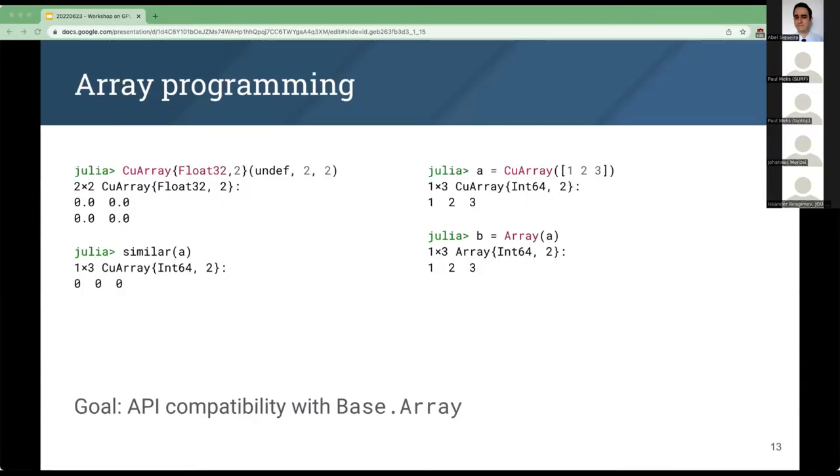So once you have your system set up with a GPU and CUDA.jl installed, you can start to use the CuArray type to manage your memory with the same APIs as you would with the Base.Array type. For example, we can allocate an array with undefined values but set the size, create similar arrays, initialize arrays and upload data, and download data back by calling the array constructor. We try to make these APIs as similar as possible to the base array type that works on the CPU, so you can take existing codes developed for the CPU and execute them using the CuArray type.